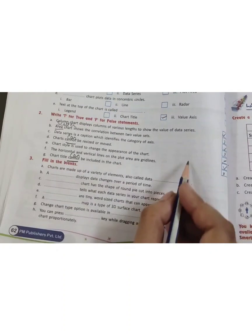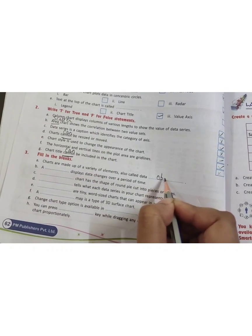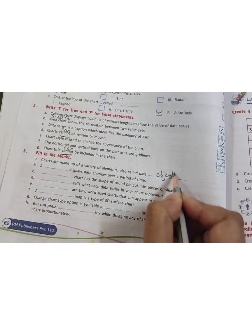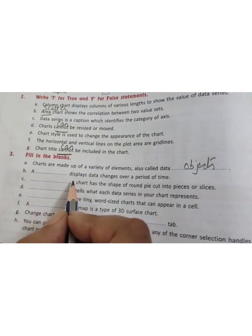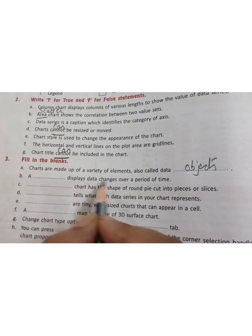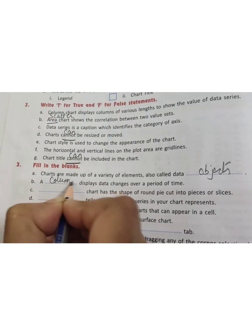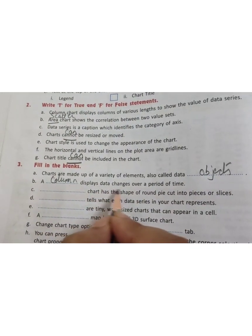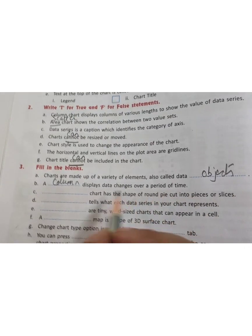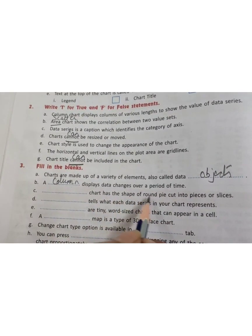Column chart displays data changes over a period of time. Pie chart has the shape of round pie cut into pieces or slices.